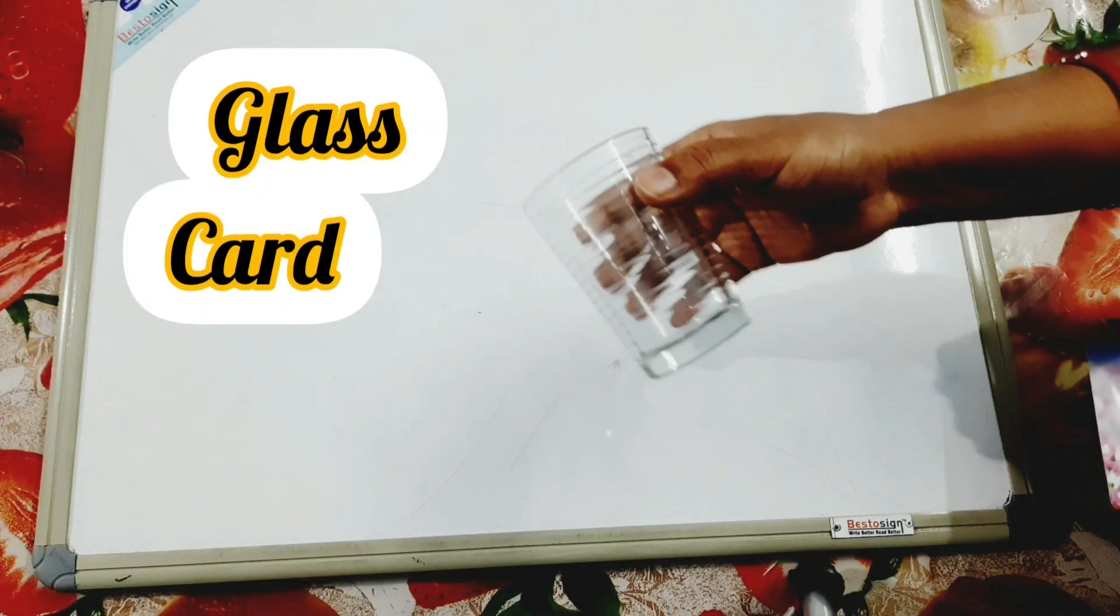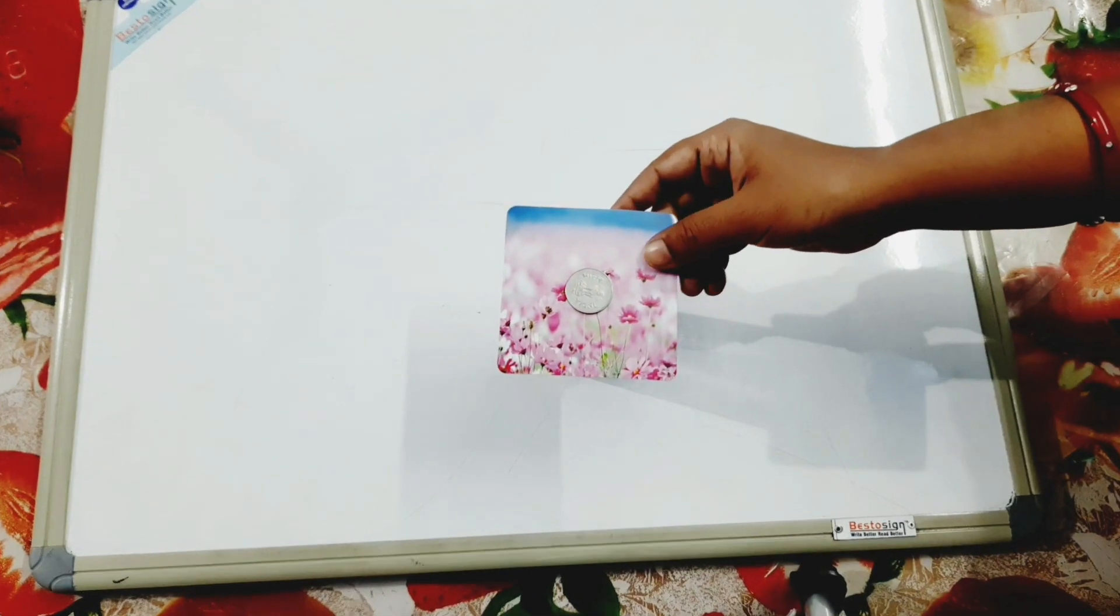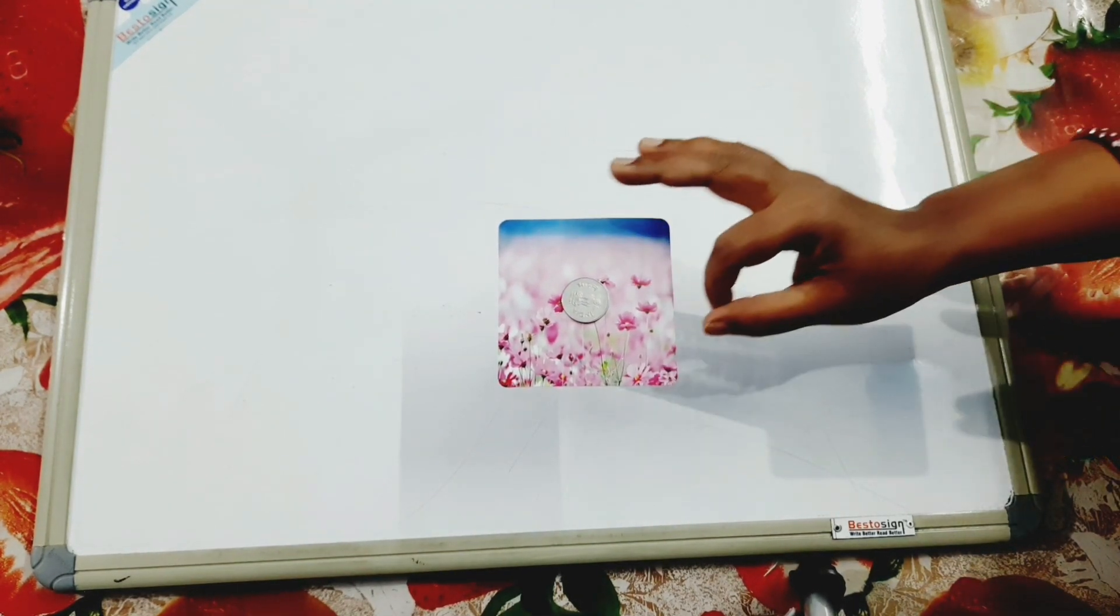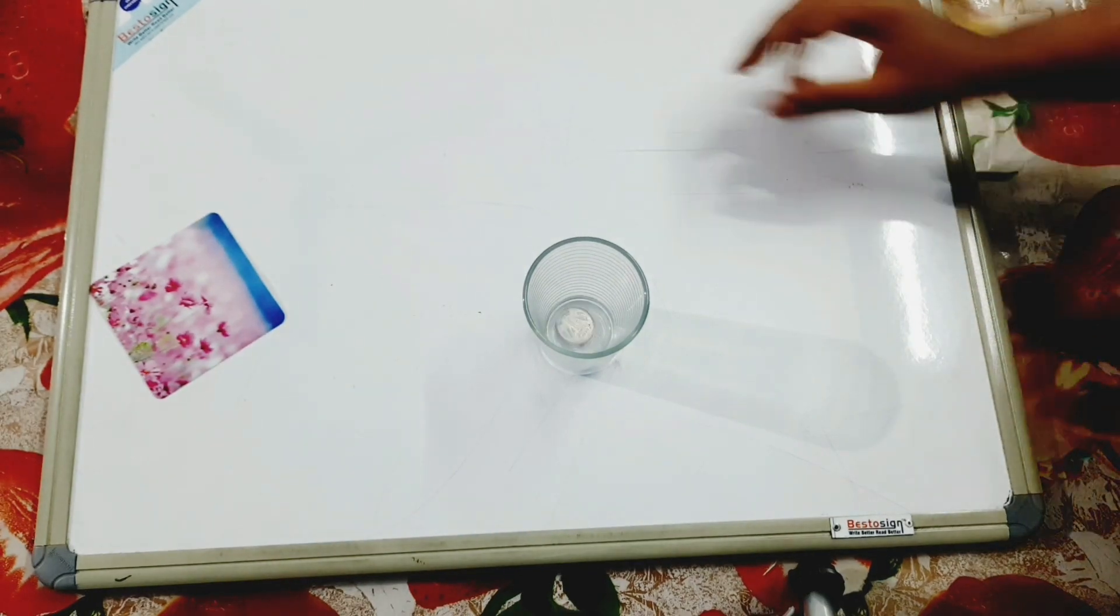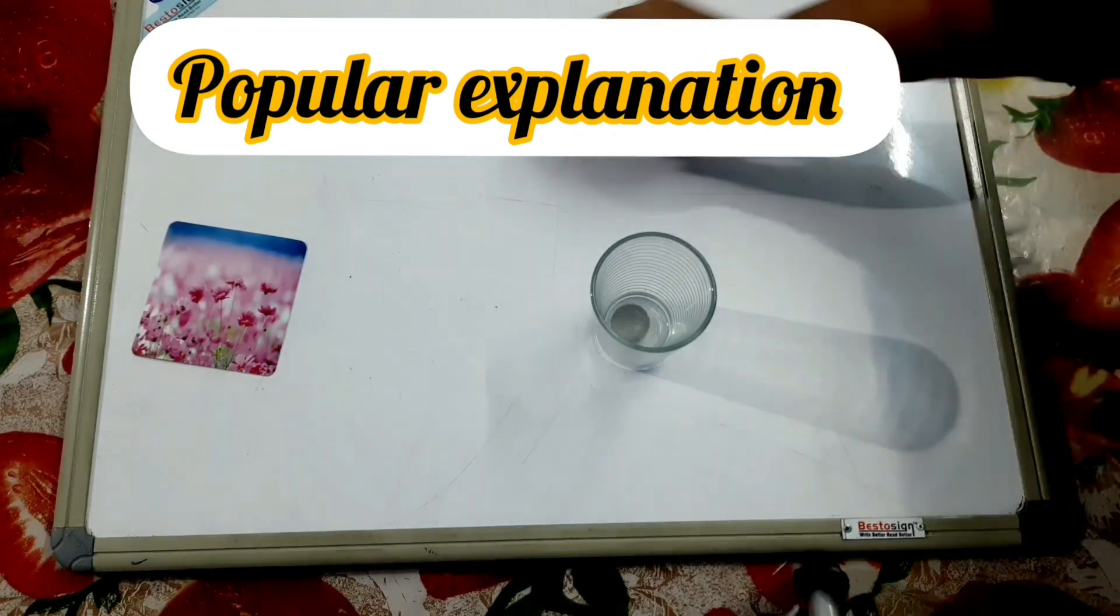Take a glass, a card, and a coin. Keep the coin on the card and place the card on the glass. Flick the card and observe. The popular explanation is that this is based on Newton's first law of inertia.